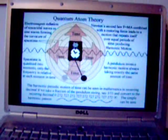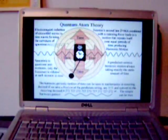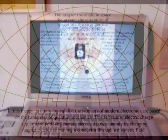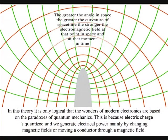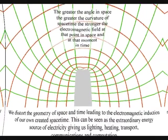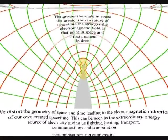In this theory, it is only logical, that the wonders of modern electronics, are based on the paradoxes of quantum mechanics. This is because electric charge is quantized, and we generate electrical power, mainly by changing magnetic fields, or moving a conductor through a magnetic field.